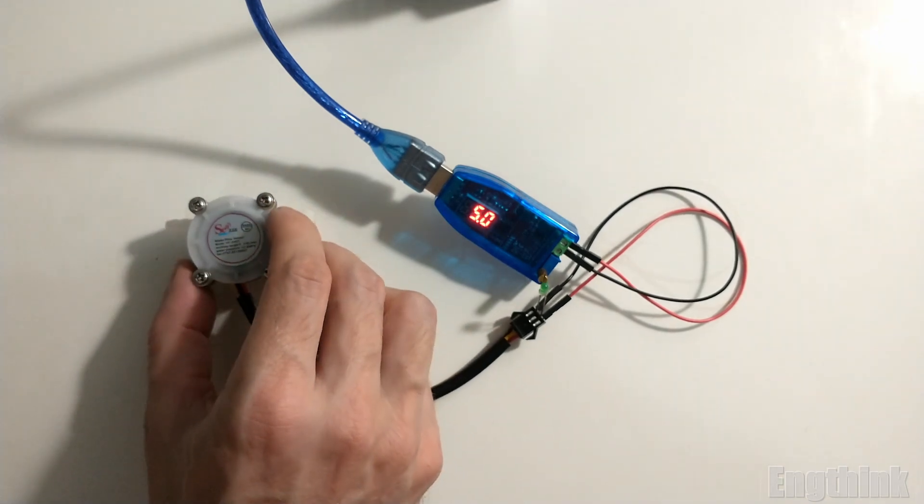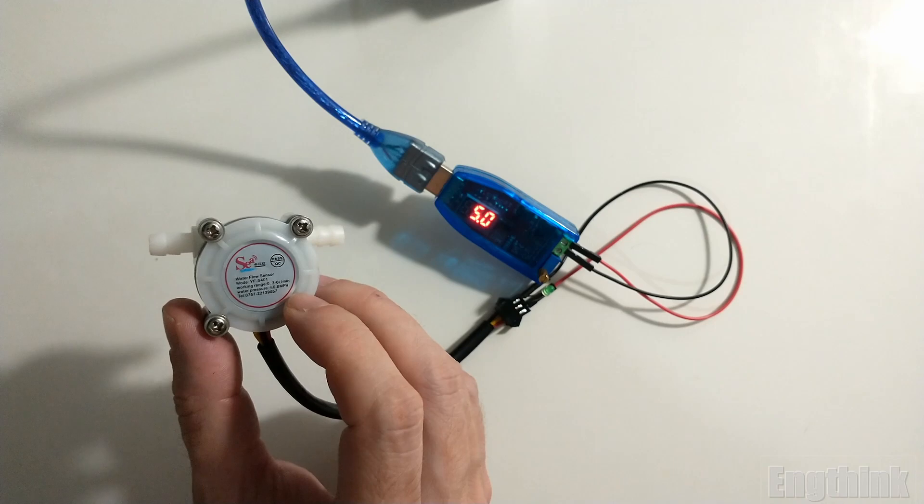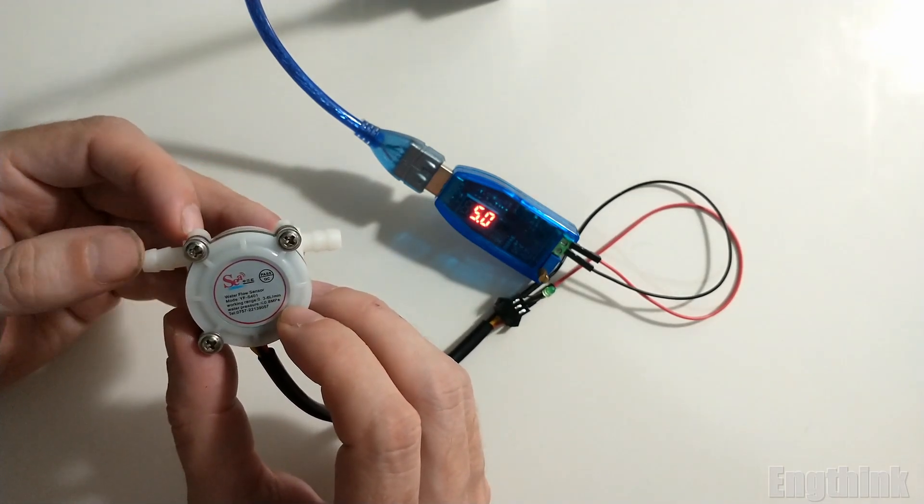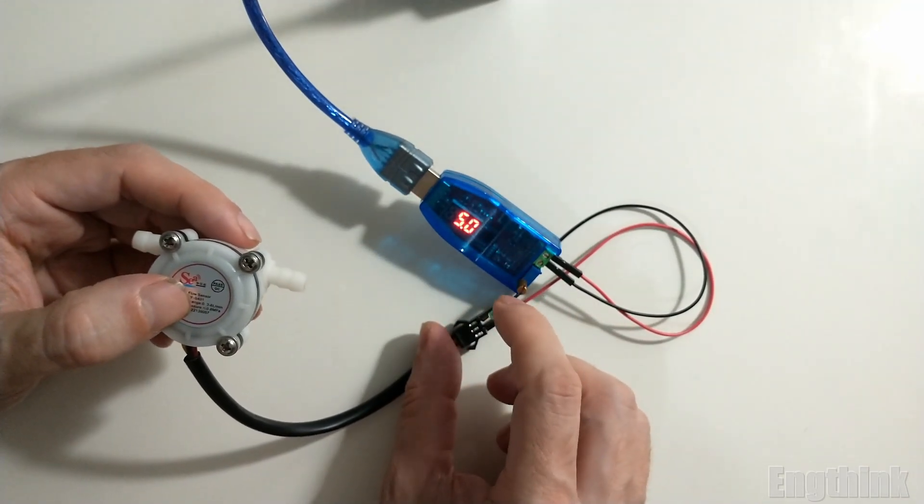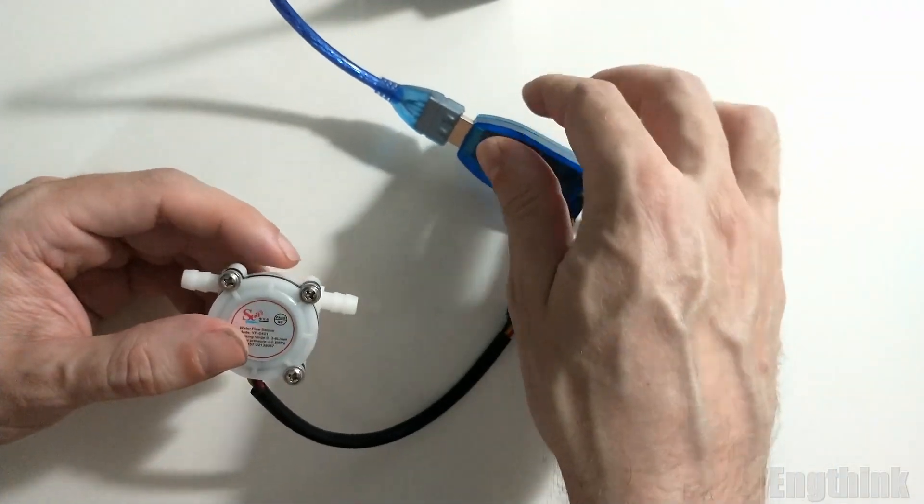The next step is to pass water inside the flow sensor. According to the flow inside the sensor, the LED that is connected to the output will blink slower for a low flow rate and will blink faster for a high flow rate.